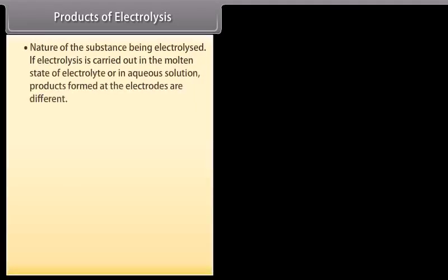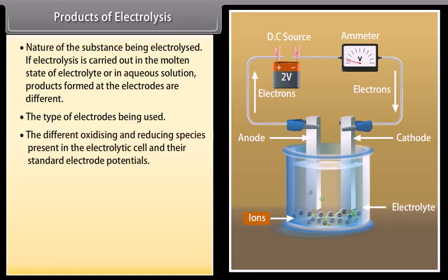Products of electrolysis depend mainly upon the following factors: nature of the substance being electrolyzed. If electrolysis is carried out in the molten state of electrolyte or an aqueous solution, products formed at the electrodes are different. The type of electrodes being used. If the electrode used is inert, it does not take part in the reaction, or if the electrode is reactive, it takes part in the electrode reaction. Then the products of electrolysis would be different.